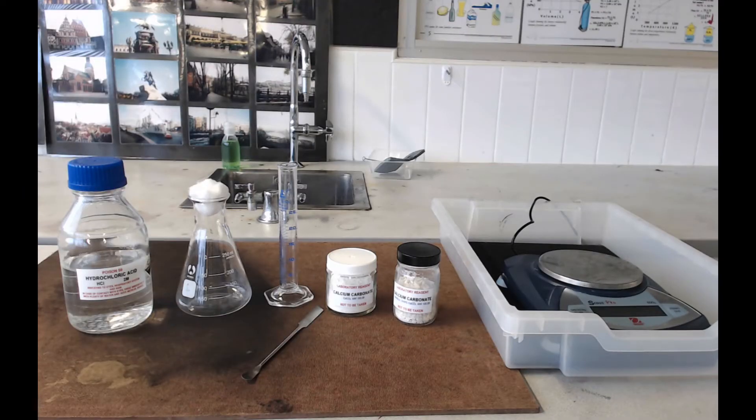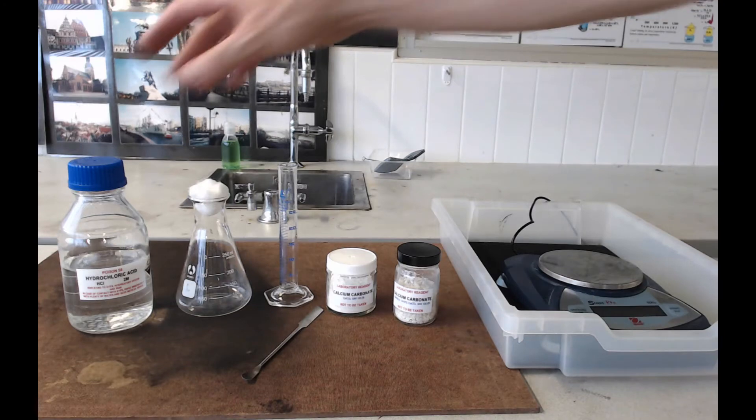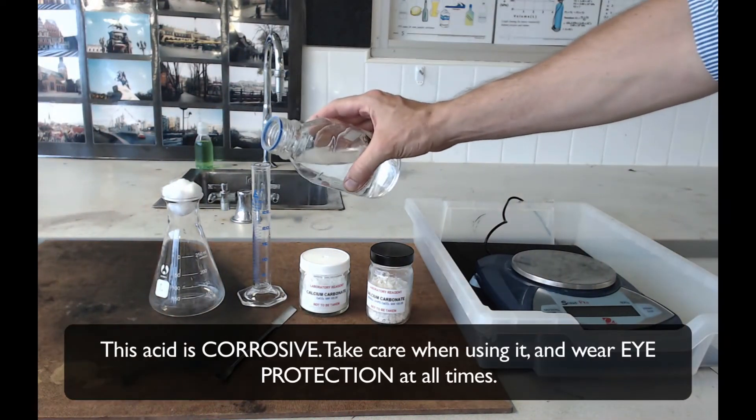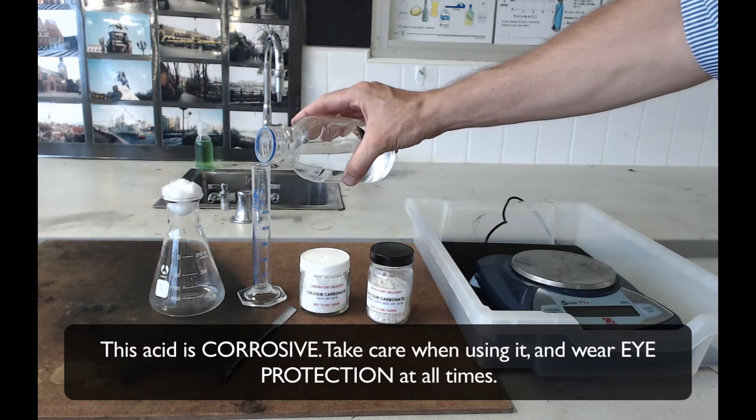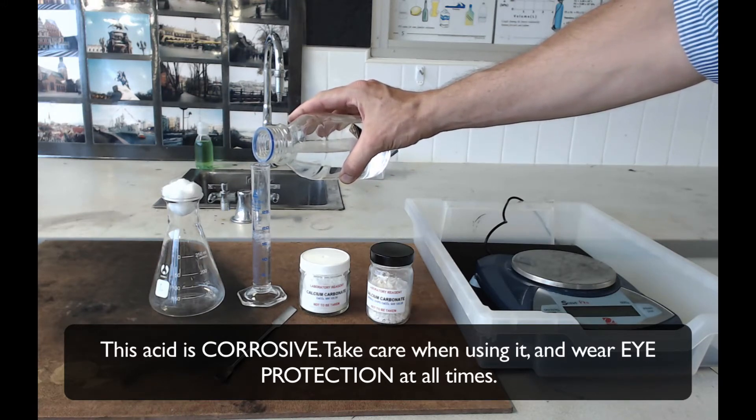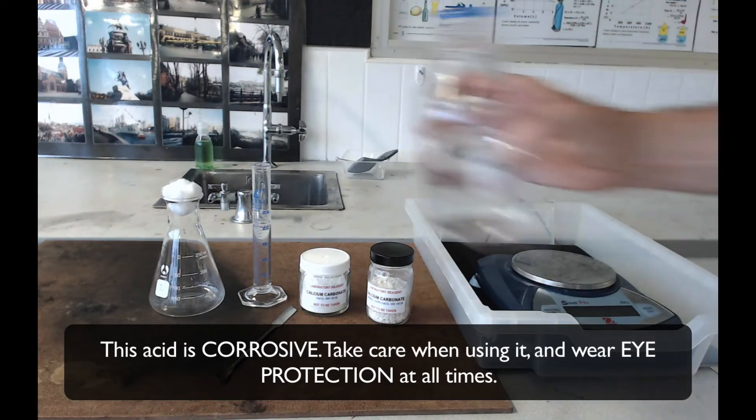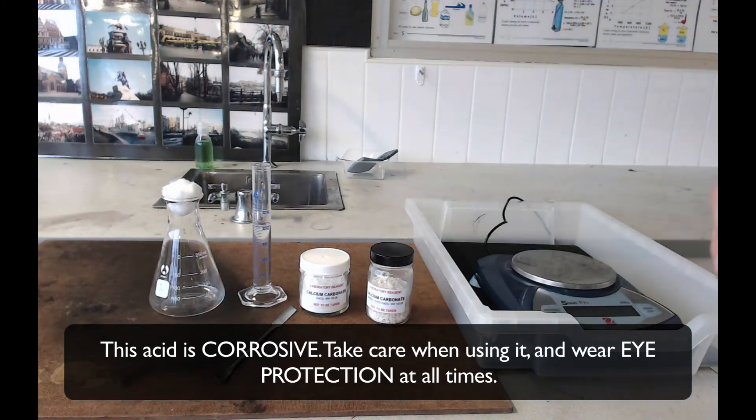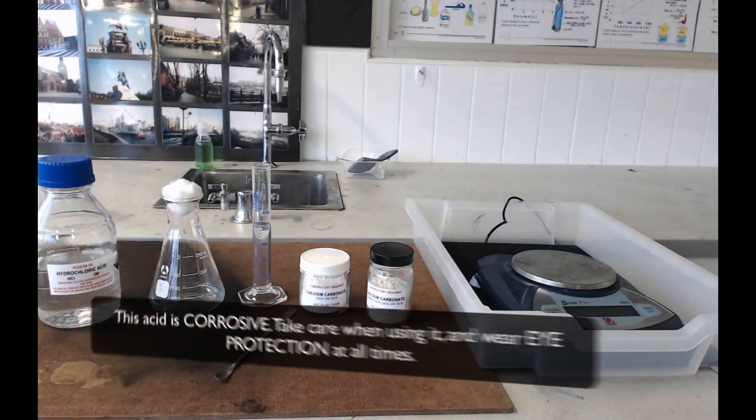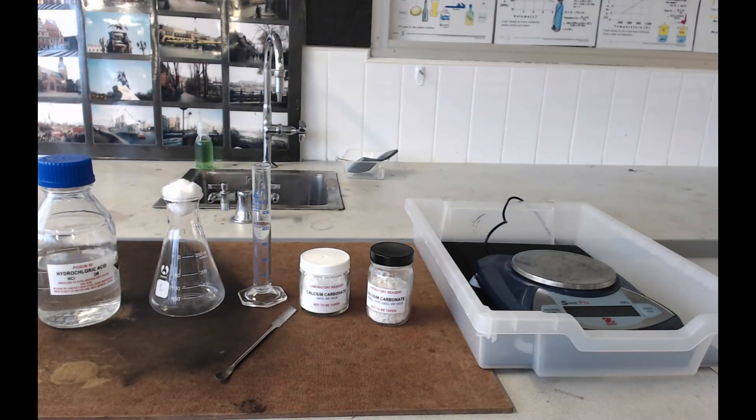Now the first thing to do is measure out 20ml of hydrochloric acid. Just pour as close as you can to 20ml into your measuring cylinder. If you take a little bit too much, just pour the excess down the sink - don't put it back in the bottle because that could contaminate what's in there.